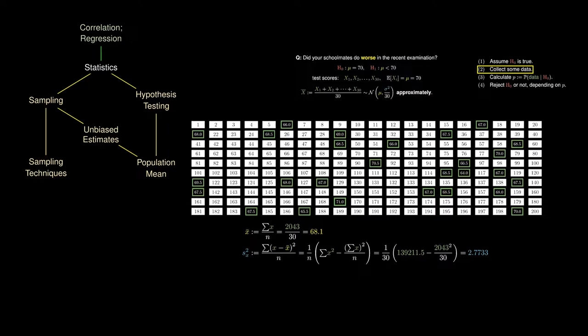We'll obtain a sample variance of 2.7733. Unlike x-bar, s sub x-squared is not the unbiased estimate of the population variance. To obtain this unbiased estimate, we need to multiply by a correction factor. We can run through the formulae using 139211.5 and 2043 once again to obtain s-squared equal to 2.8690. This is the unbiased estimate of the population variance. These two pieces of data help us approximate what the population mean is likely to be, as well as what the population variance is likely to be.